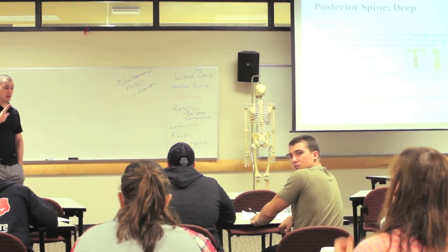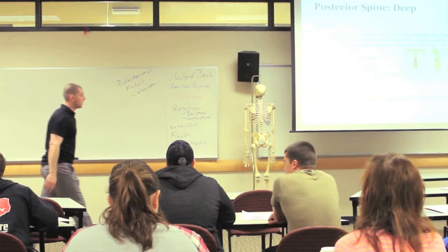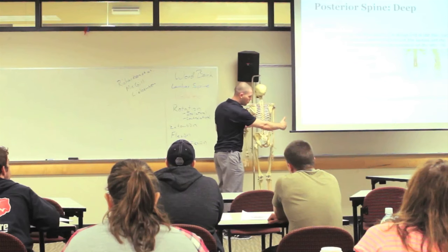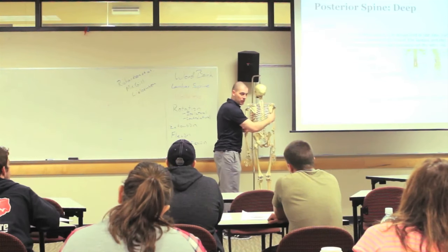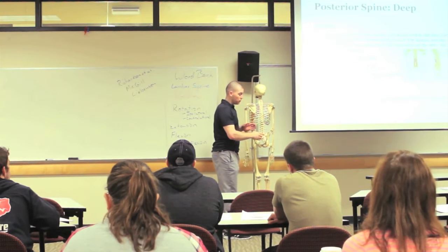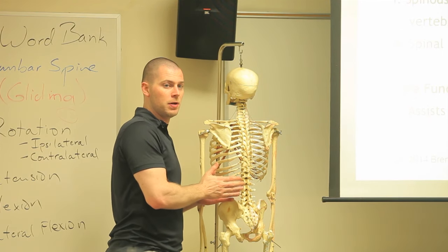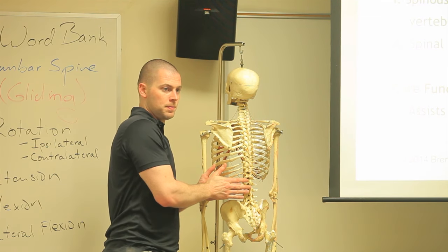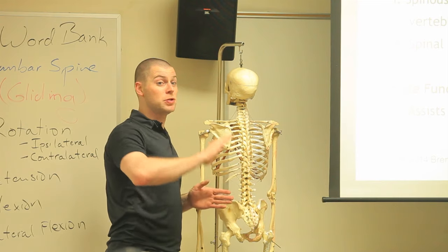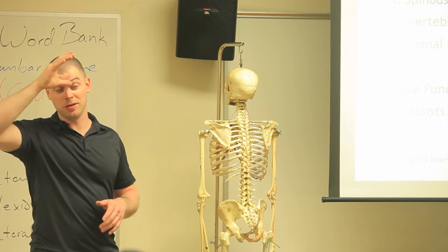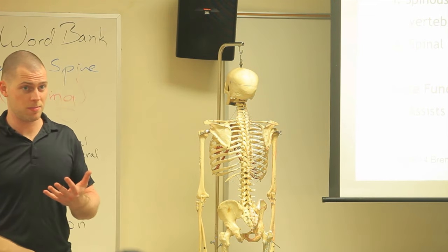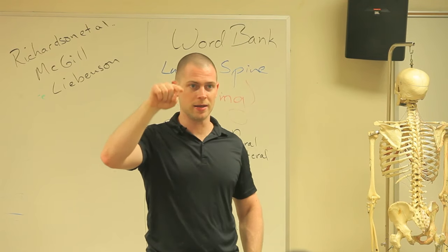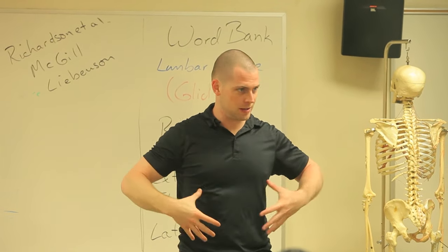The multifidi are very deep and lie right against the facet joints of the lumbar spine. Your TVA more or less stops at the thoracolumbar fascia. Your multifidi are sandwiched between a couple layers of the thoracolumbar fascia. If you go to those functional anatomy articles and look up multifidi or transverse abdominis, there are tons of pictures showing cross sections so you get a good idea of where all of this exists relative to everything else.